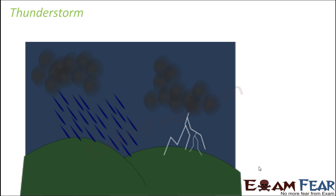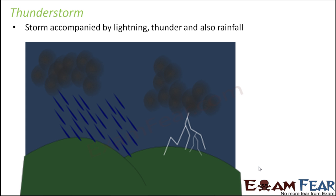Let's start with thunderstorm. We have been talking about wind, so how is wind and thunderstorm different? When we talk about a thunderstorm, the name itself says it — it is a storm accompanied by lightning, thunder, and also rainfall. This situation is witnessed immediately after or during rainfall. Sometimes there might be less rainfall but too much lightning and thunder. During thunderstorm you will also see that strong winds blow, really strong compared to normal winds in the evening or morning.